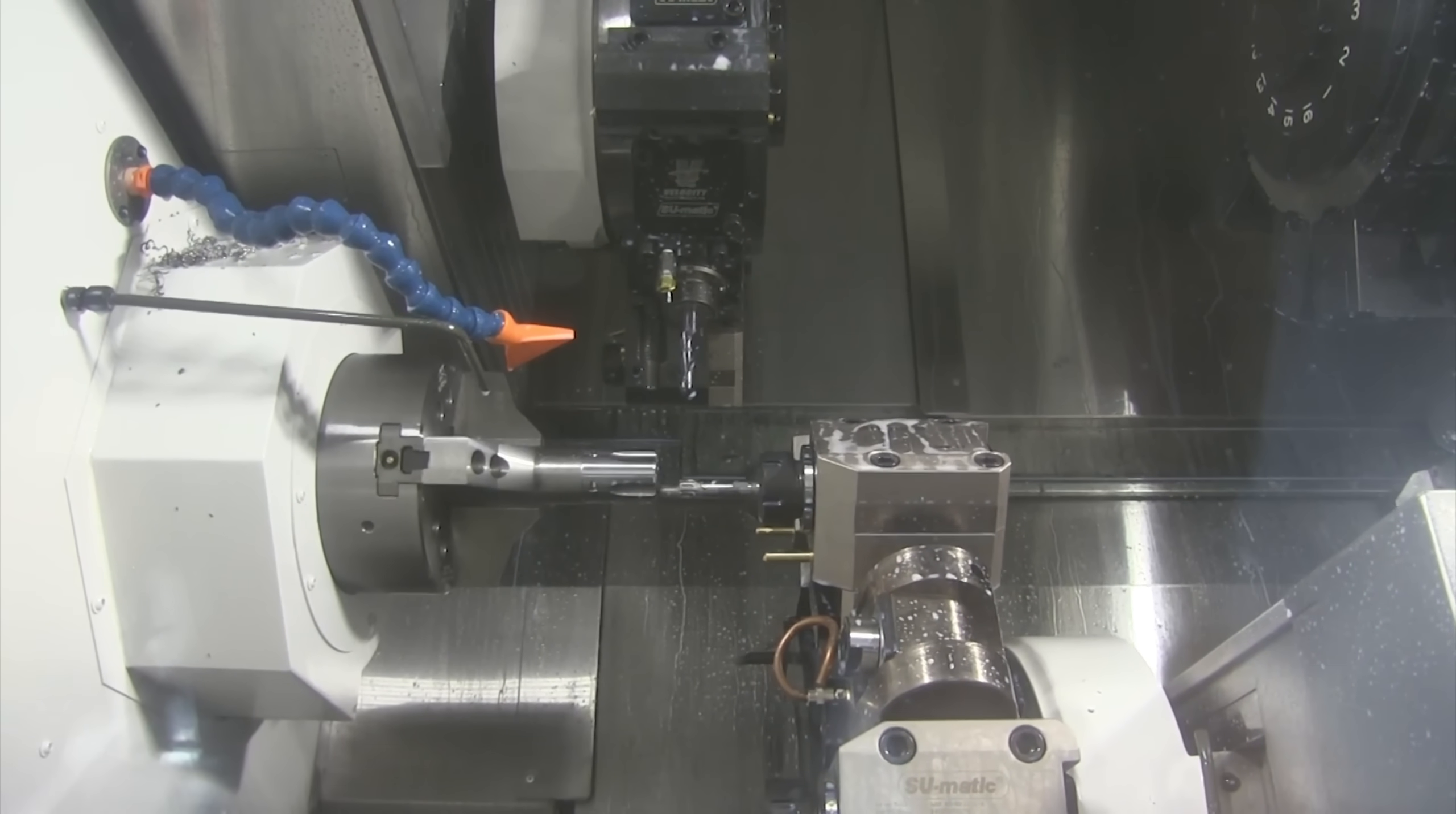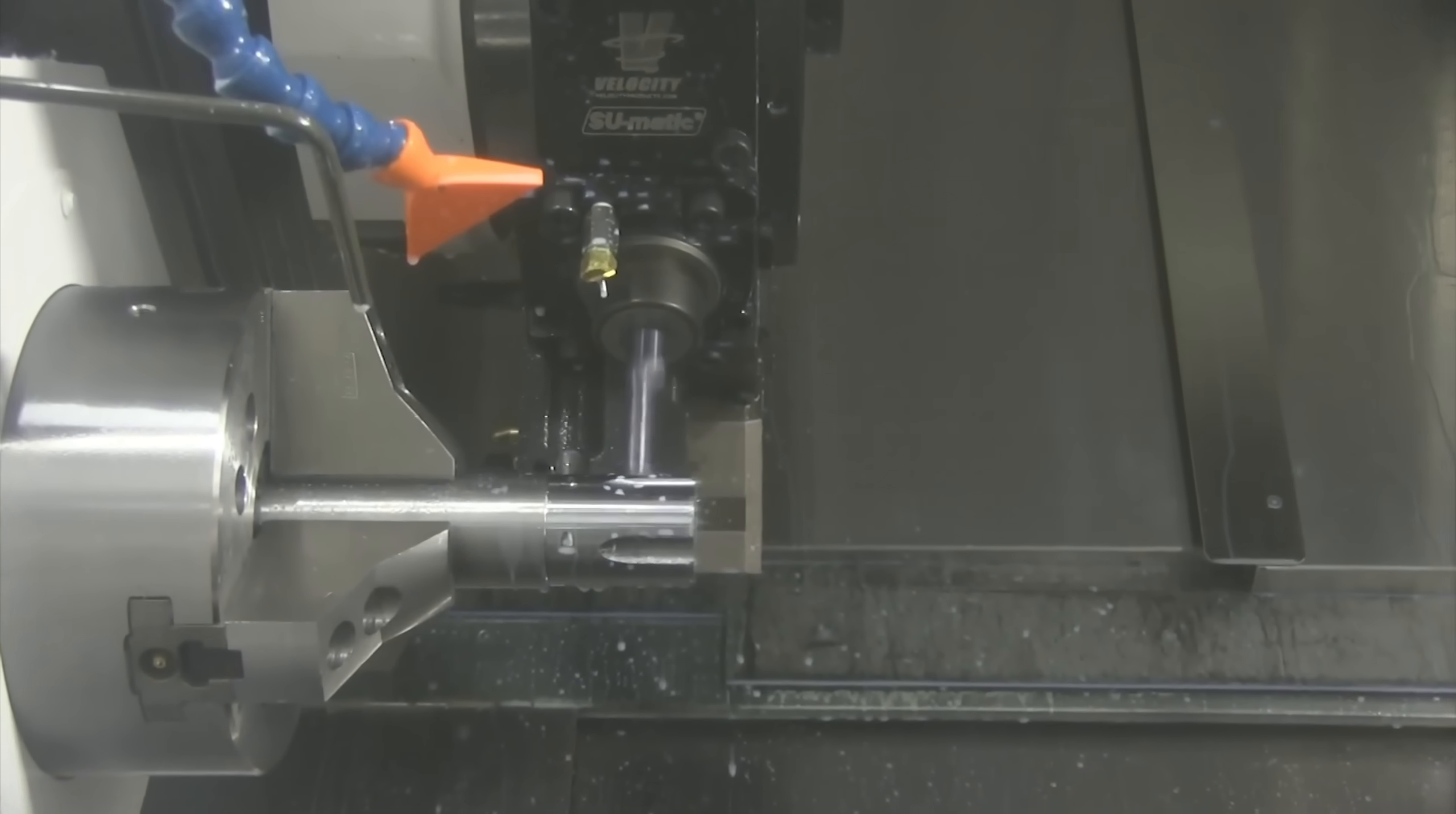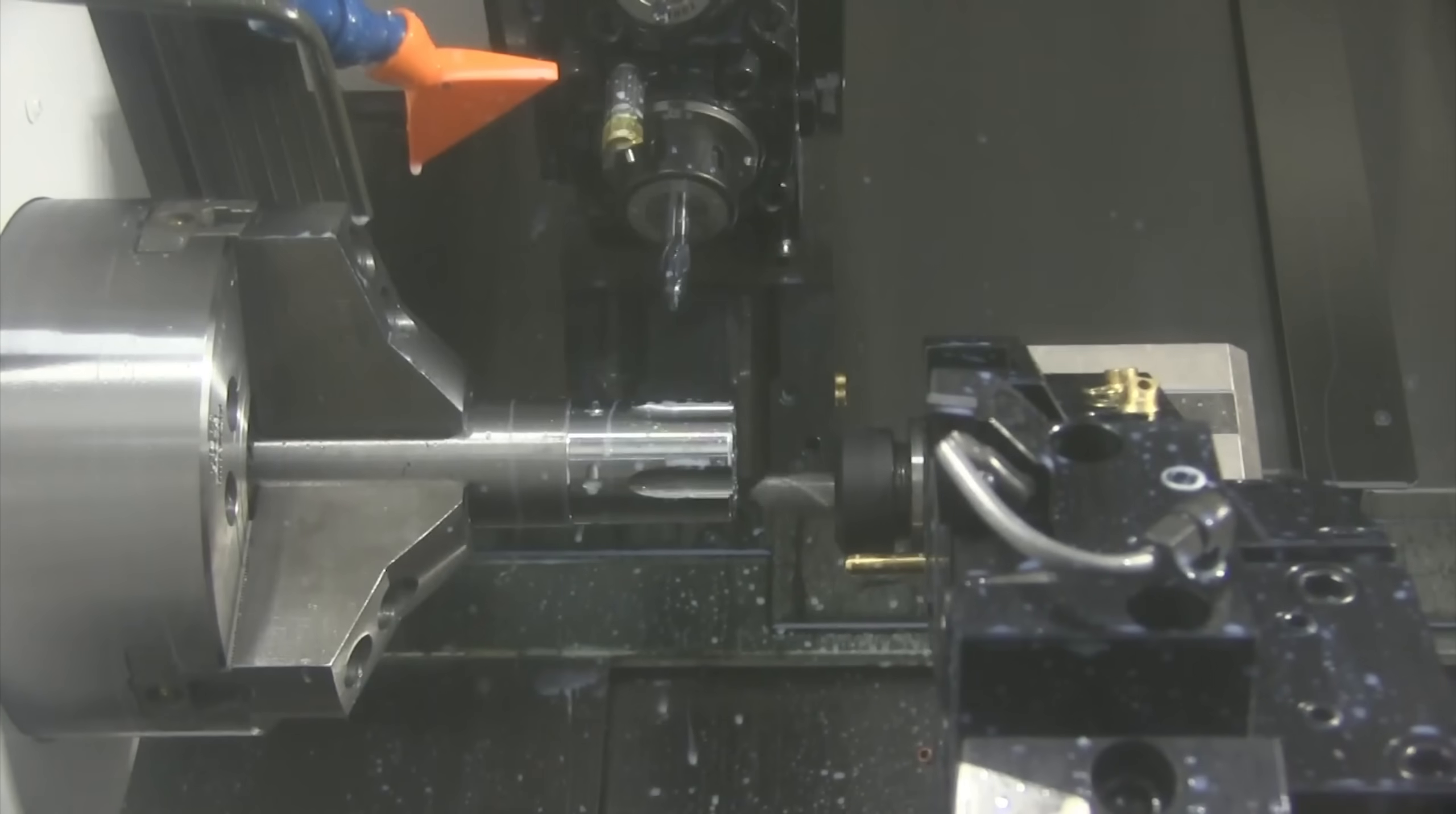Throughout these steps, the focus stays on precision and reliability. The cylinder's job is to hold and rotate the ammunition with perfect timing, so every detail matters. By the time a cylinder passes its final checks, it's ready to work seamlessly with the frame and other components.